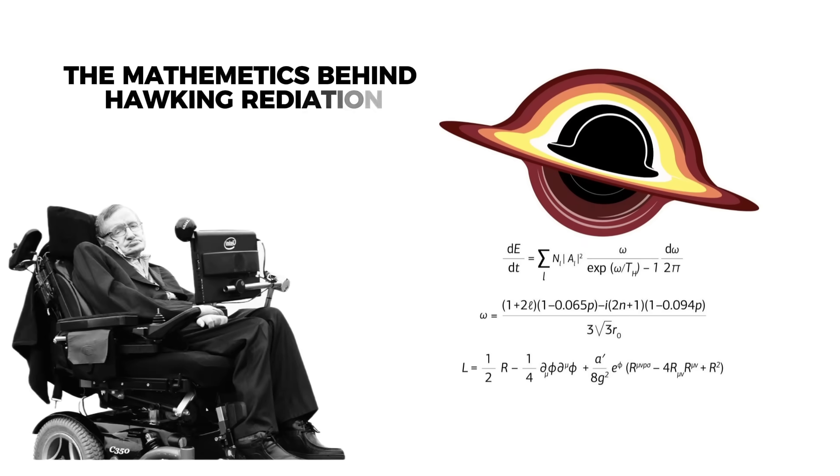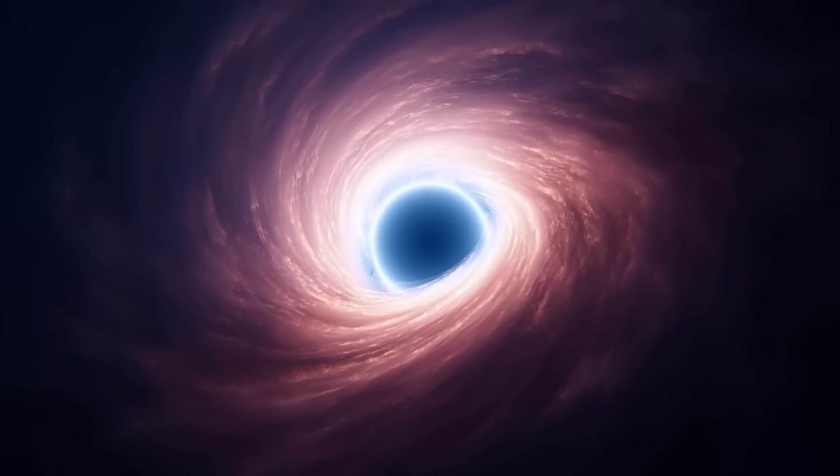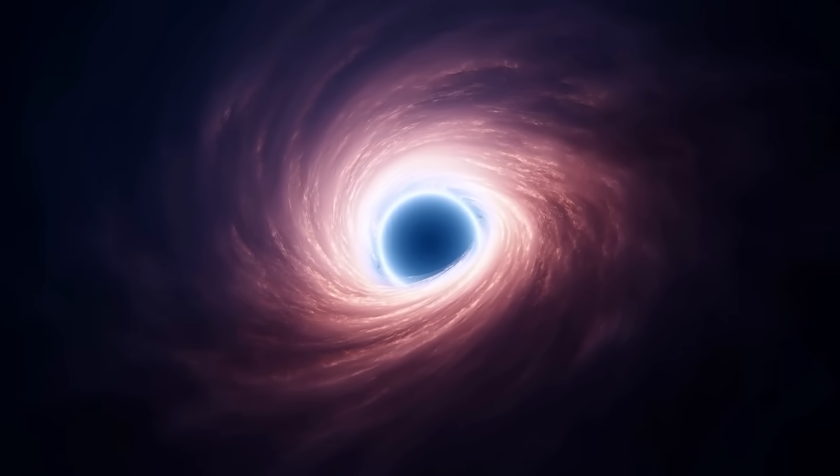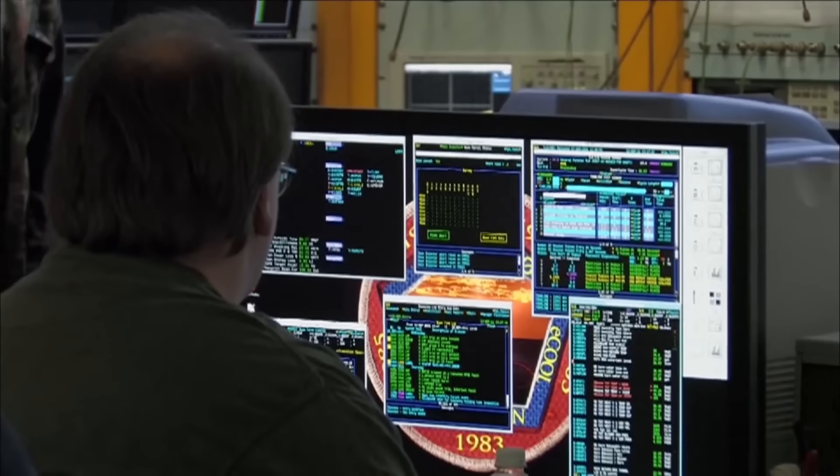Even more intriguing is how the anomaly's profile matches equations seen in black hole physics. The mathematics behind Hawking radiation, where particles and antiparticles appear at a black hole's edge, shows similar negative value behaviors in certain conditions.